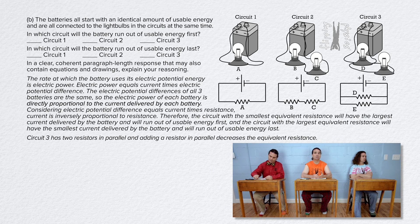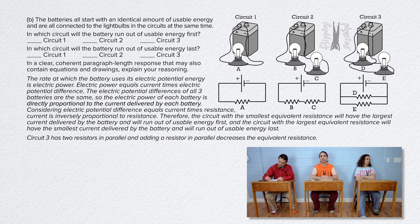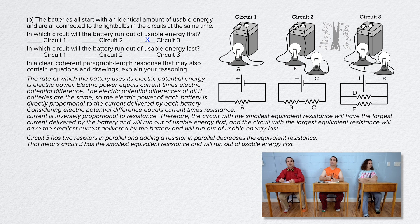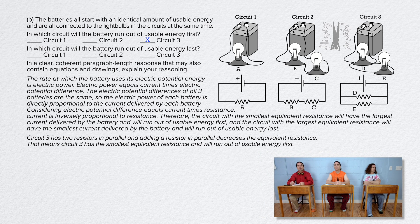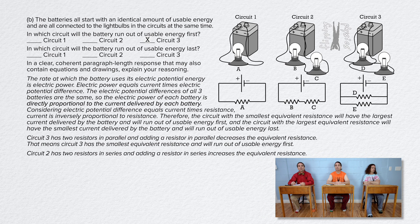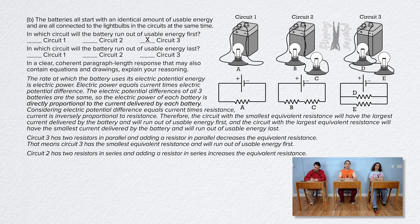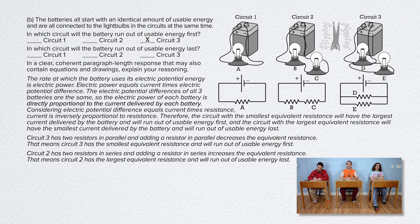Circuit 3 has two resistors in parallel, and adding a resistor in parallel decreases the equivalent resistance. That means circuit 3 has the smallest equivalent resistance and will run out of usable energy first. Circuit 2 has two resistors in series, and adding a resistor in series increases the equivalent resistance. That means circuit 2 has the largest equivalent resistance and will run out of usable energy last.